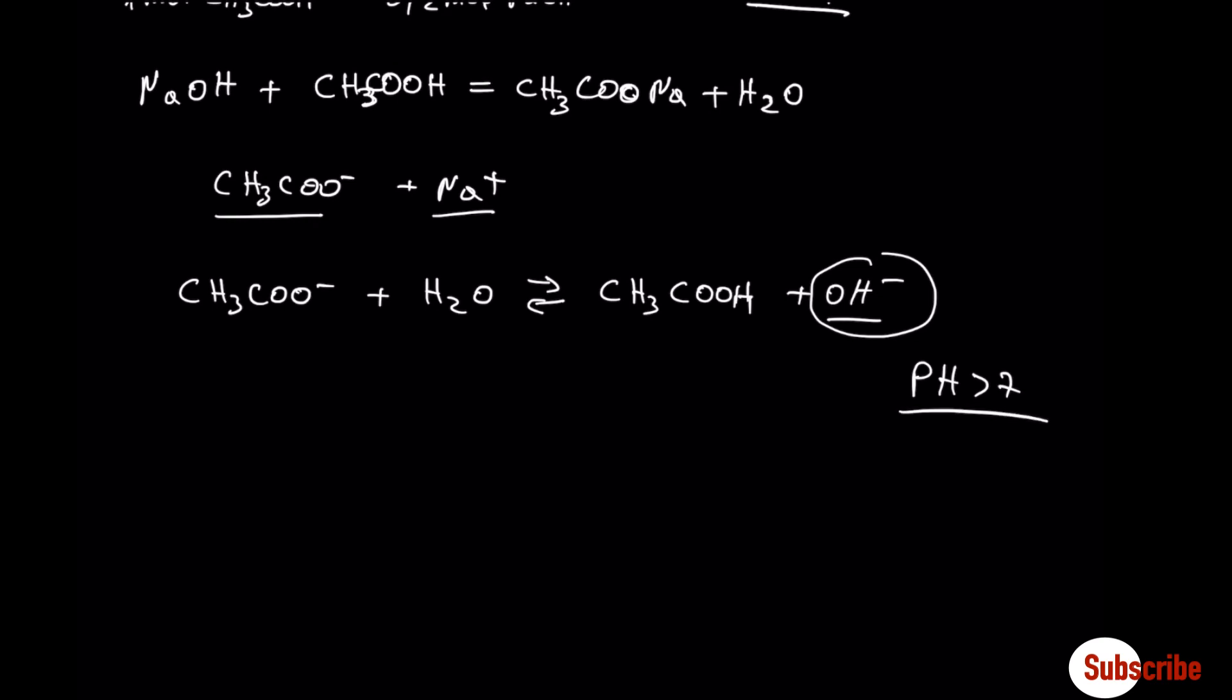From here we have to write the equilibrium constant, because we have two arrows here, because the conjugate base is a weak base. KB equals...